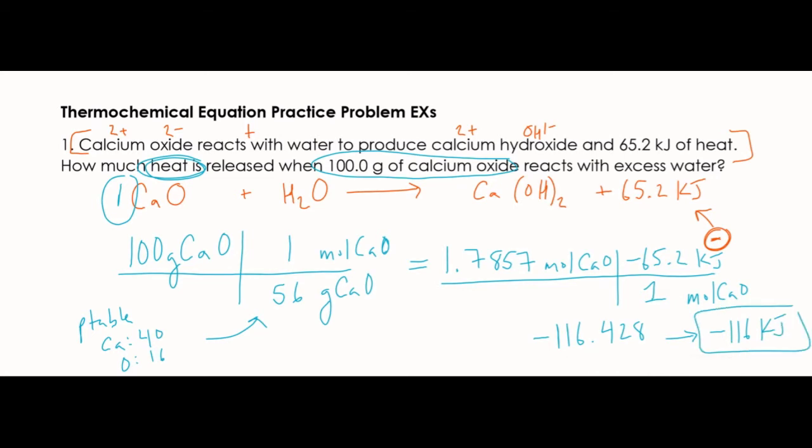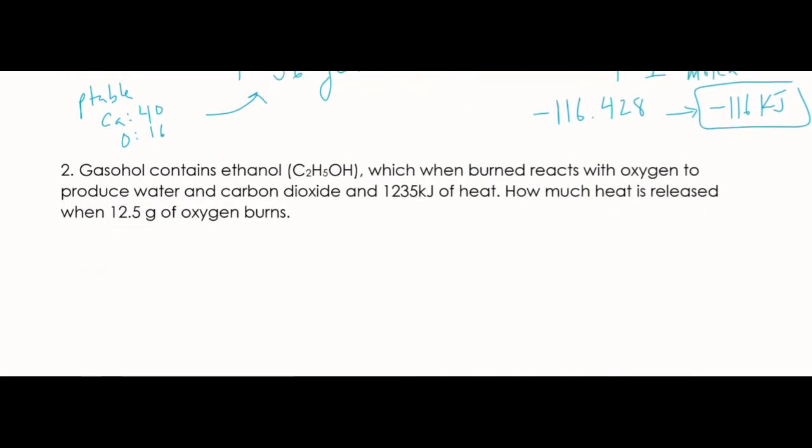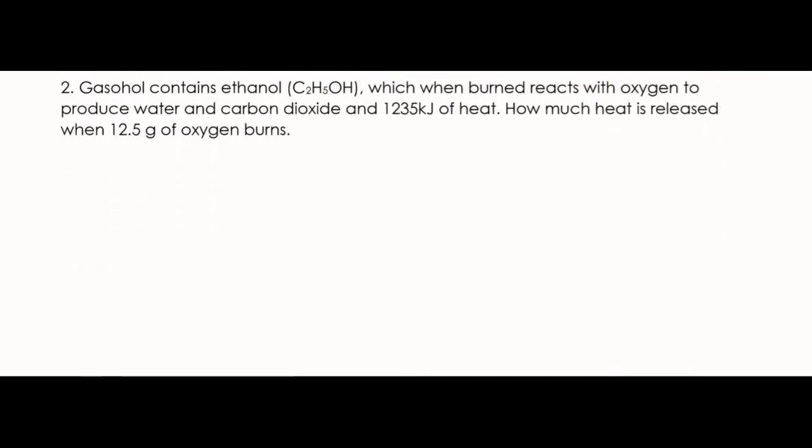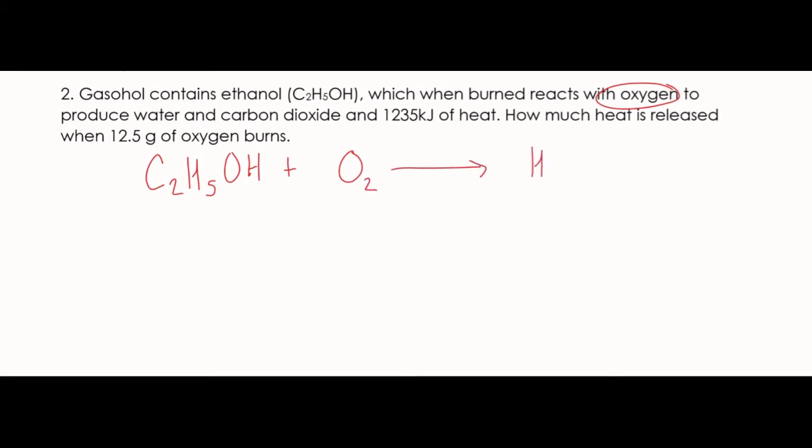One more example here. Gasohol contains ethanol, which when burned, reacts with oxygen to produce water and carbon dioxide and 1235 kilojoules of heat. And then it wants to know how much heat is released from 12.5 grams of oxygen. So we have that ethanol, and that's going to react with oxygen. And remember, oxygen is part of the 7-up rule. It should be highlighted on your periodic table. So it gets a 2 when it's by itself.